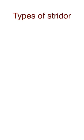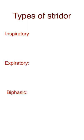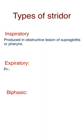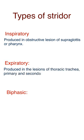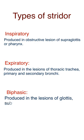There are three types of stridor: inspiratory, expiratory, and biphasic. Inspiratory stridor is produced by obstructive lesions of the supraglottis or pharynx. Expiratory stridor is produced by lesions of the thoracic trachea, primary and secondary bronchi. Biphasic stridor is produced by lesions of the glottis, subglottis, and cervical trachea.